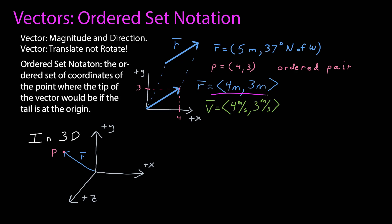In three dimensions, the same thing happens. Translate the vector so that the tail is at the origin. I find the point corresponding to the tip, and then the vector is the ordered triplet.